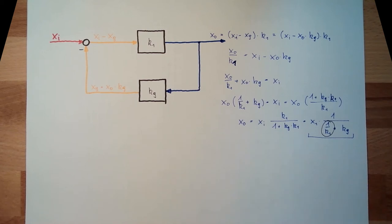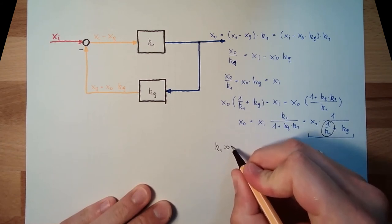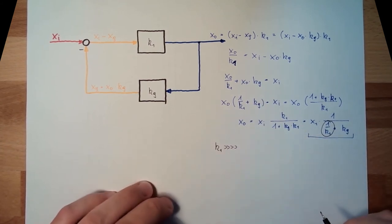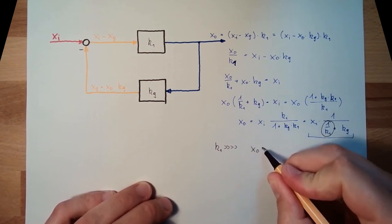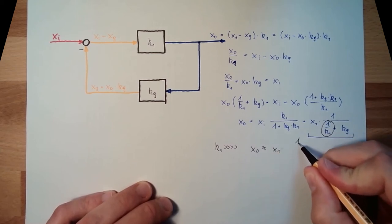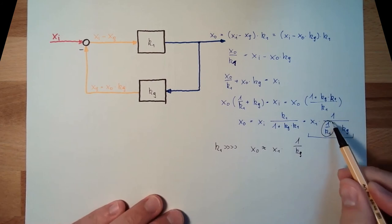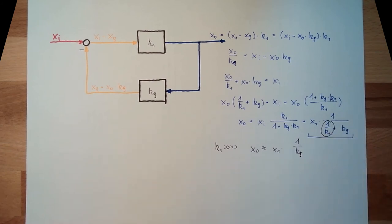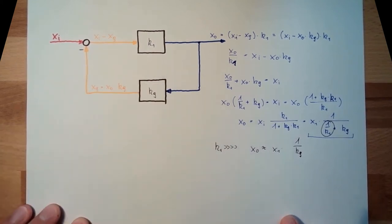1 divided by K1. Let's say if this K1 is really huge, big. Then this XO is approximately XI because this is getting zero or very small. So, the sensitivity is only given by this back feed.